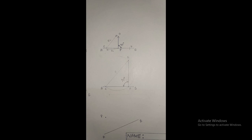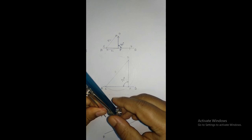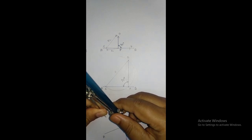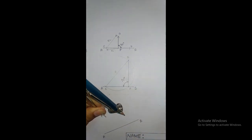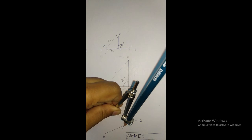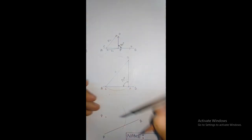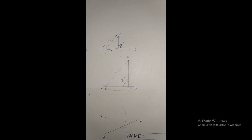Without the help of any instrument, with P as center and any convenient radius, draw an arc cutting CD. This arc CD is intersecting at point E on the given line AB.